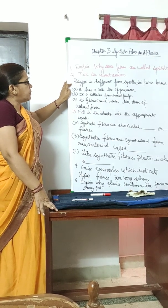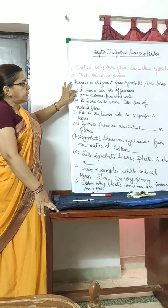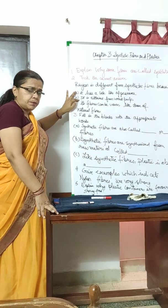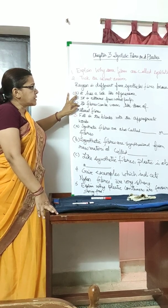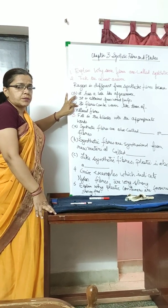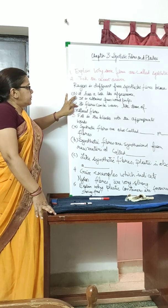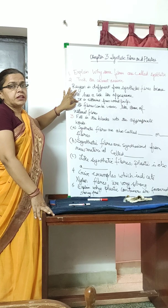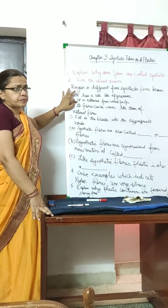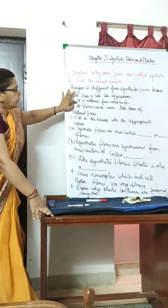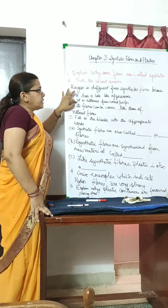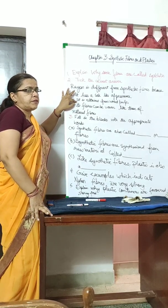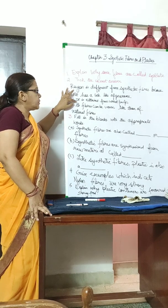Next question: Choose the correct answer — rayon is different from synthetic fibers because it is obtained from wood pulp. The correct answer is that rayon is obtained from wood pulp, yet it falls into the category of synthetic fibers, while other synthetic fibers are artificially produced.